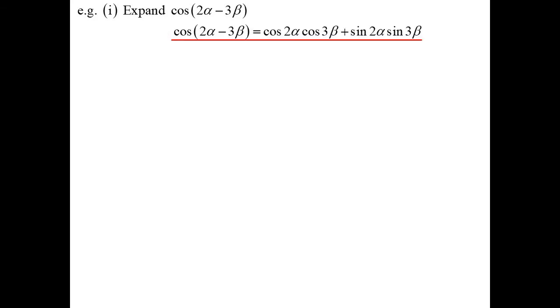Let's look at an example: cos(2α − 3β). It's cosine, so the pattern goes cos cos sin sin. If it's not the sine, it's not the sine — so the minus becomes plus. Answer: cos 2α cos 3β + sin 2α sin 3β.